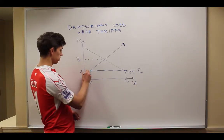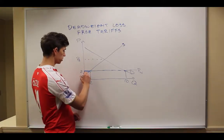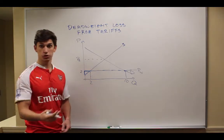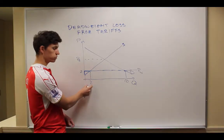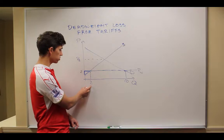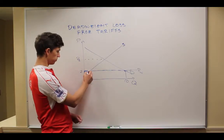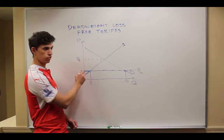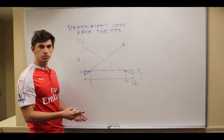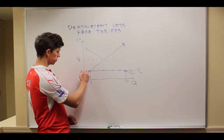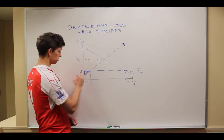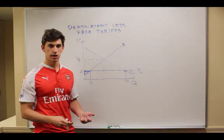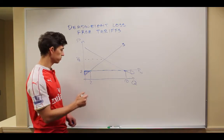And this little triangle down here is the domestic producer surplus. Producers are producing 2 items, they're selling each one for $2. But for any units below that, they would have been willing to sell for fewer than $2, and so this right here gets them surplus. If you want a refresher on how that works, you can go look at some of the older videos.